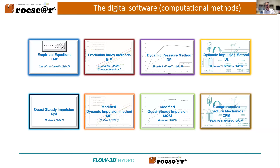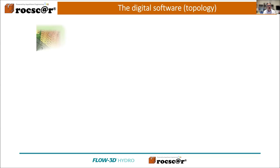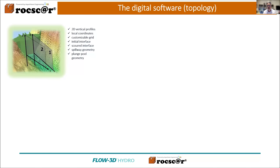The methods — there are quite some methods in here, and this list is not final; it is continuously under development. We have the erodibility index method, for example, block uplift methods — several ones — and fracture mechanics, which gives you the time evolution. What's relevant here is that for these methods, the main parameters are clearly described in a user manual and a technical manual, and also the range of values you should use for each parameter are clearly outlined. From the topological point of view, RockScour on its own is a 2D software working in vertical 2D profiles.